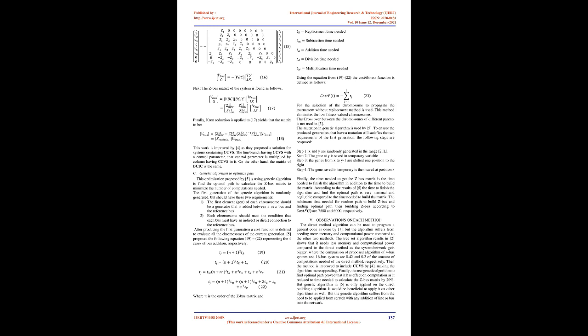The tree set and link set algorithm, proposed by references 1–3, uses the tree set (TS) and corresponding links (LS) of the system to obtain two matrices: BCIC and VBC respectively, then develops the bus matrix from these two matrices. The TS and LS contain bus currents from Cases 1 and 2, and bus currents from Cases 3 and 4 respectively. By adding the effect of LS, the full matrix is obtained. This work is improved by reference 4, which proposed a solution for systems containing CCVS, where the control parameter is multiplied by the column having CCVS.